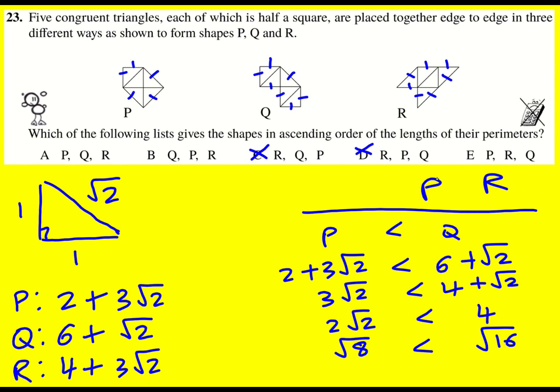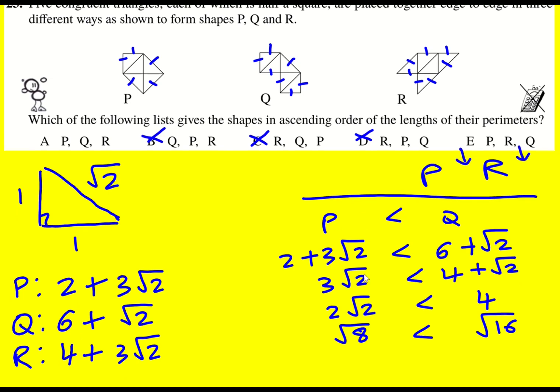Which means I can rule out that one, but I don't know yet whether Q is going to go there or there. So I now need to make a comparison between Q and R.